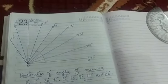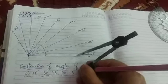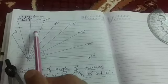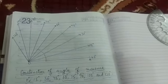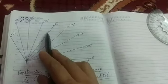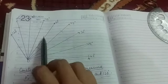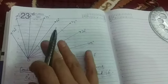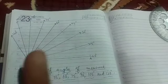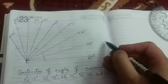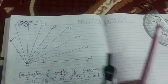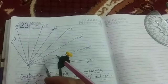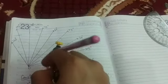So yeh bhi ho gaya. Ab, let's say mujhe banana hai 30 degree ka angle, theek hai? It is 0 and this is 60. That means the perpendicular bisector of this 0 and 60 will make an angle of 30 degrees, because this 60 plus 0 is 60. To inka perpendicular bisector banega 60 divided by 2, that means 30 degrees. So what I'll do, yaha se ek arc, suitable radius jitna bhi aapko radius lena hai, that's not the issue.